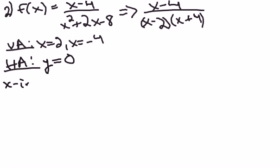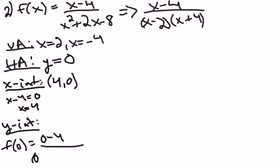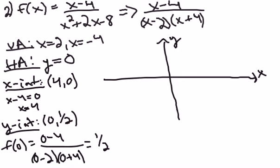For x-intercepts, this time we actually do have one. If you set the numerator equal to zero and solve, you get an x-intercept of 4, 0. Then the y-intercept — if you plug in zero for x, you get out positive one-half. Now we're going to graph this again, and I'll leave it to you to use some test points.